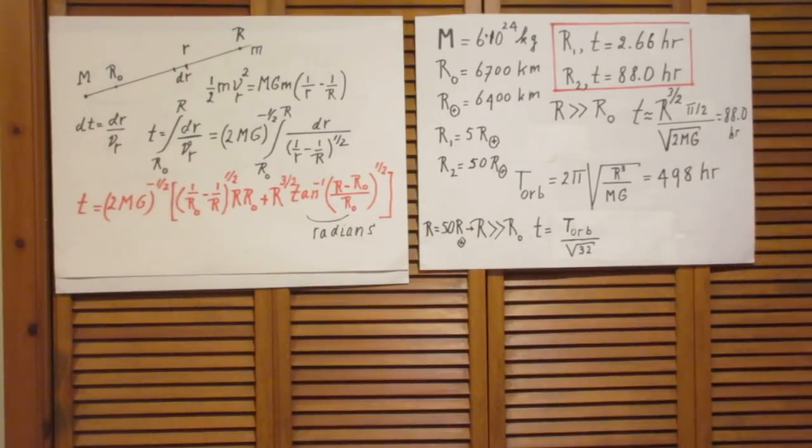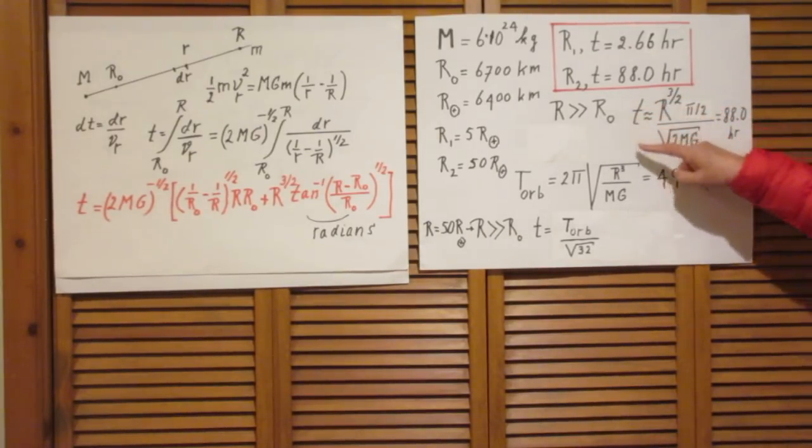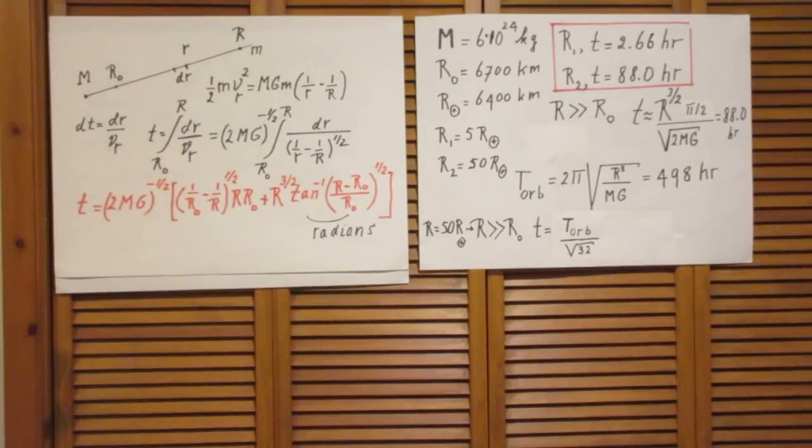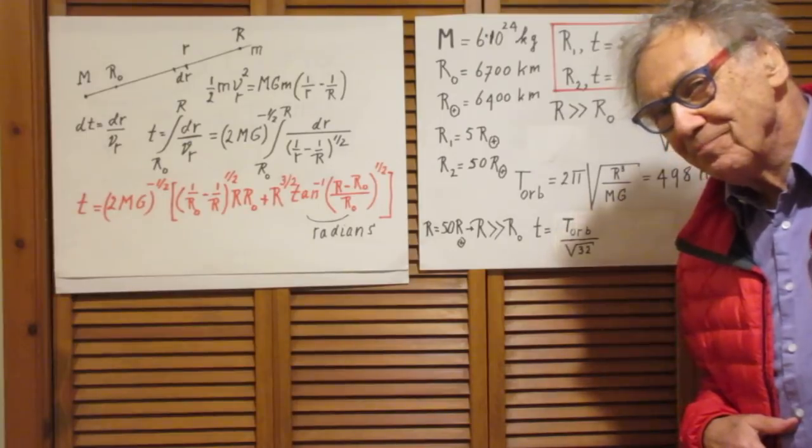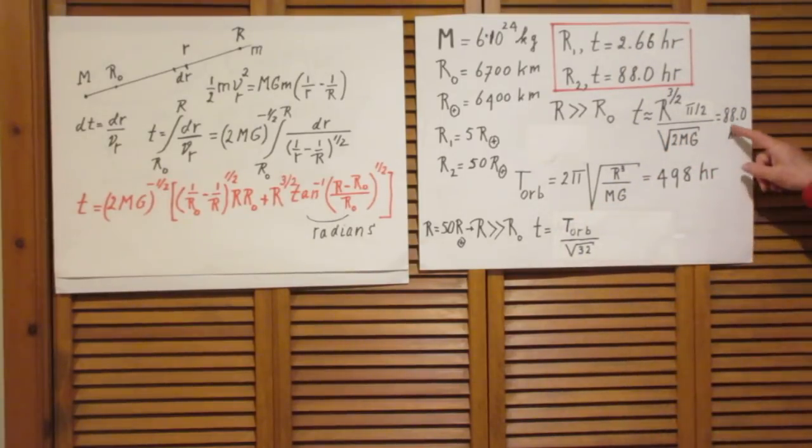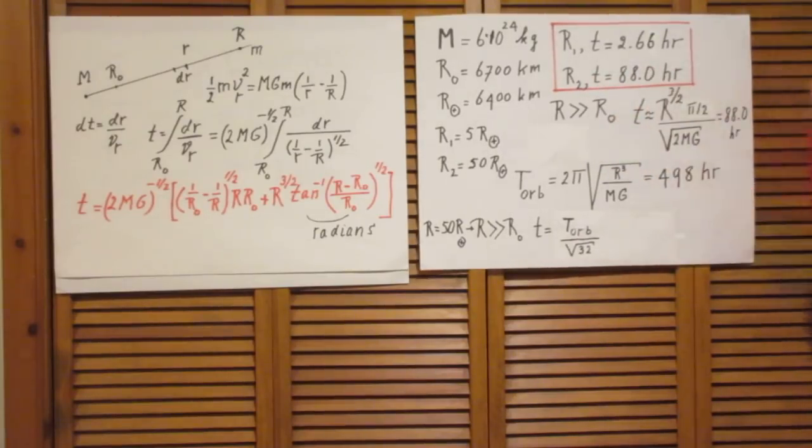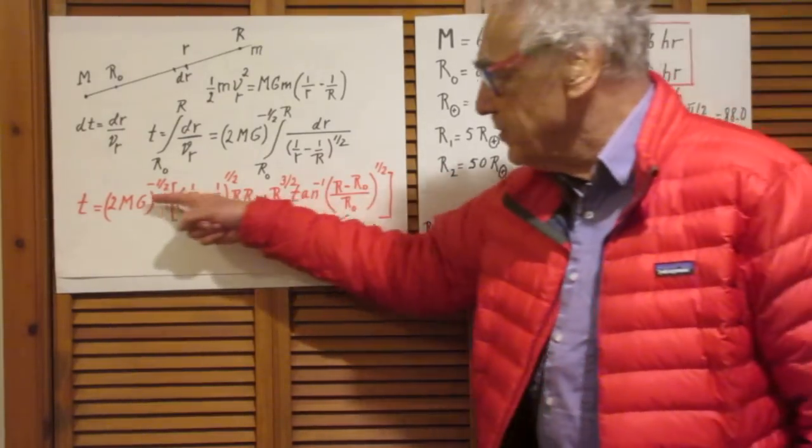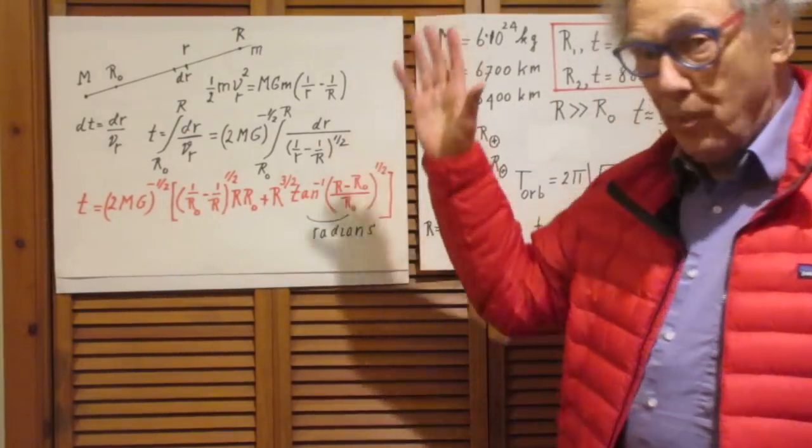And the larger R is in comparison to R0, the closer you will end up to have this freefall time. I advise you to use this equation exactly as it is. And what did you find? You found 88.0 hours, which is also what I found when I use this equation without any approximation.